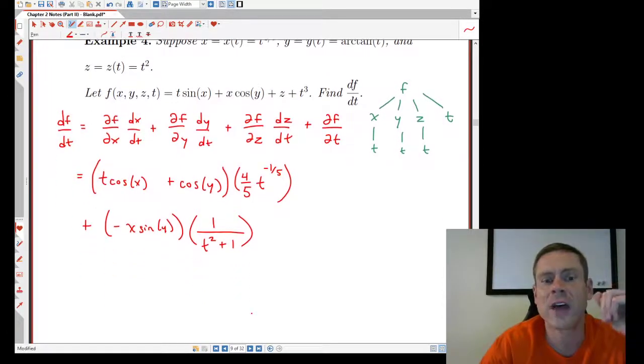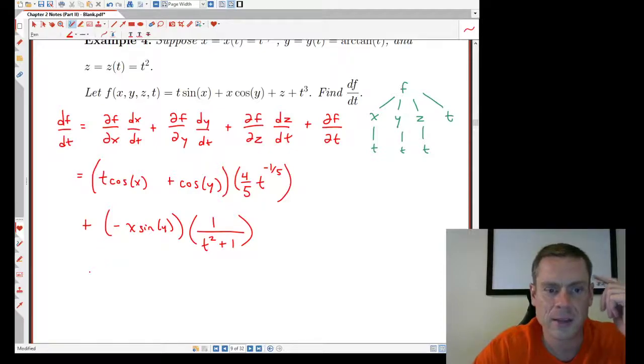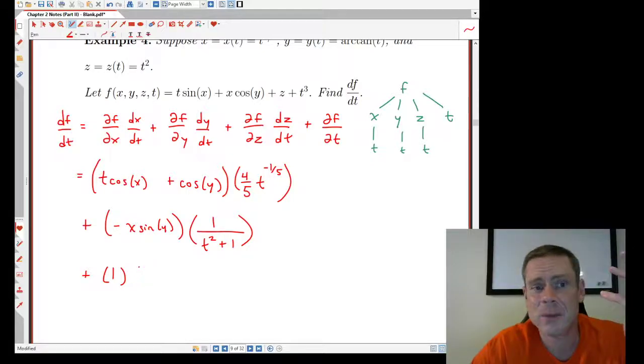All right, I still need to do ∂f/∂z, dz/dt. And that's going to give me, let's see here, ∂f/∂z. Looking through, there's only one term in f that depends on z and z itself. The derivative of that is going to be 1. dz/dt was t squared. And the derivative of that with respect to t is simply 2t.